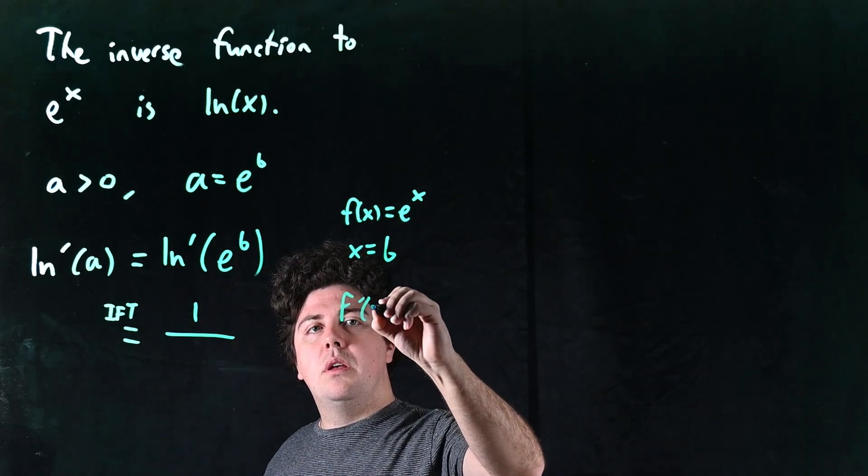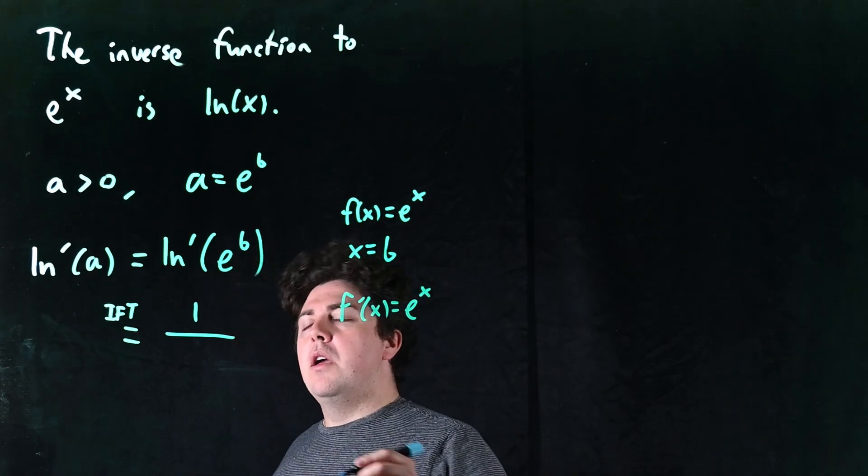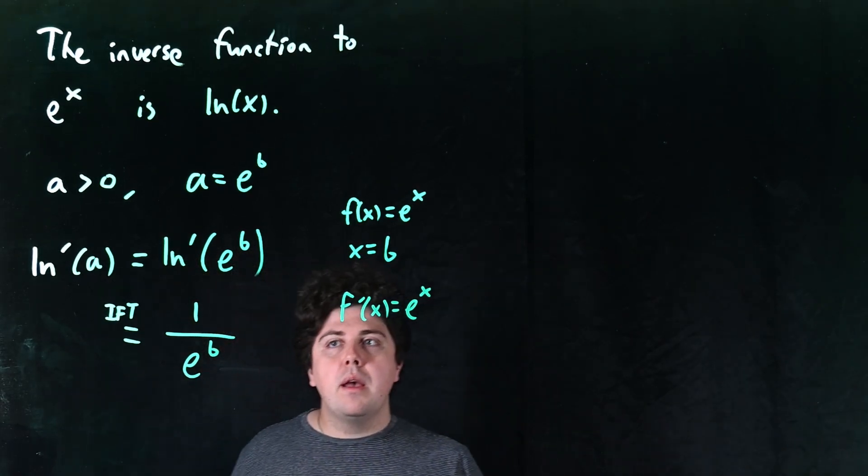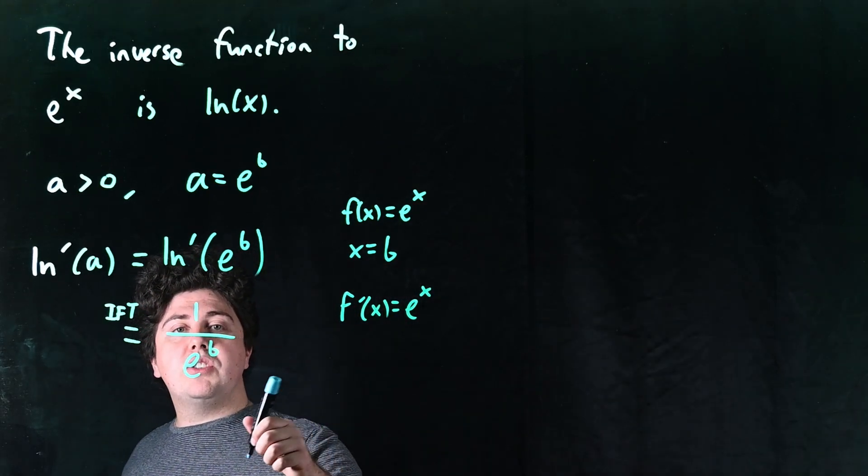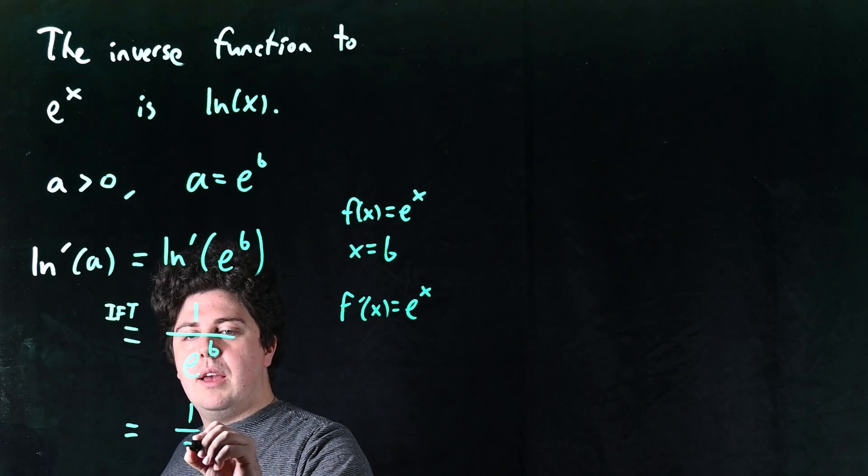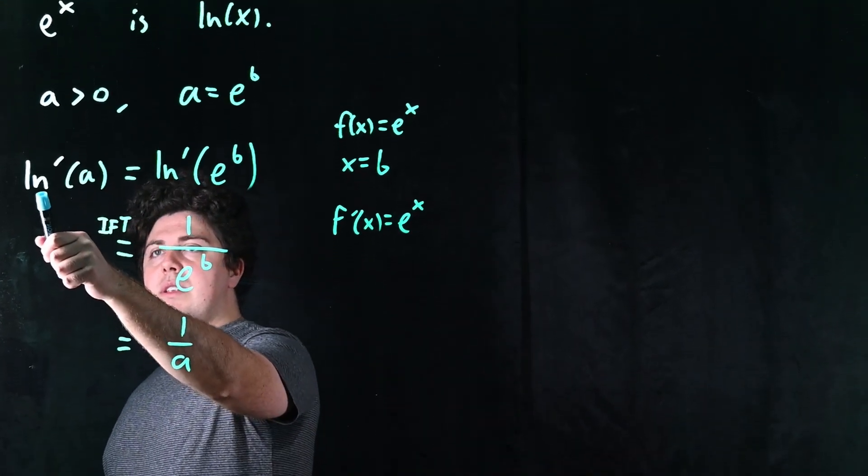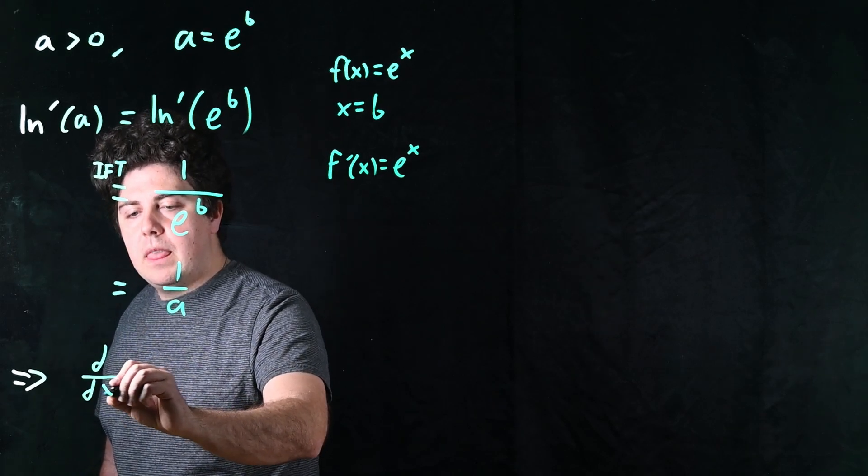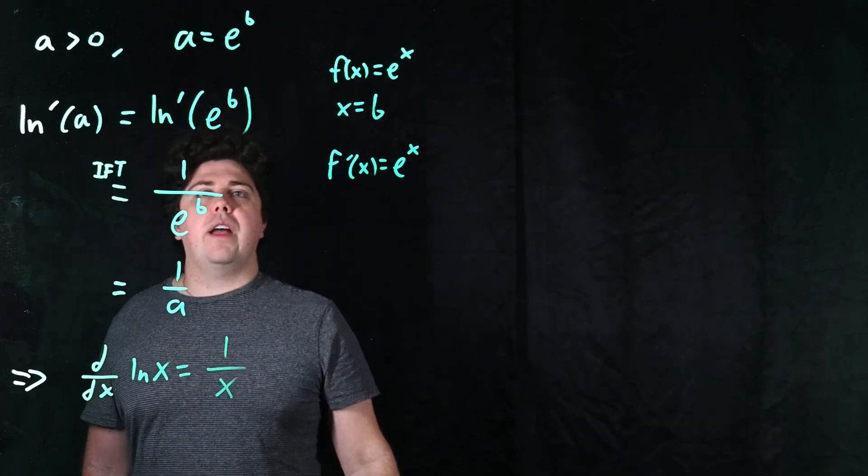But, of course, as we saw in the last video, the derivative of e to the x is itself so this is just 1 over e to the b. Okay? But now, what can we do with this? Well, we also know that e to the b is equal to a. So, we can write this as 1 over a. Aha! Well, what does this tell us? It tells us that the derivative of the logarithm function is the function 1 over x.